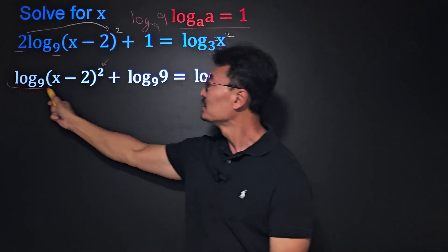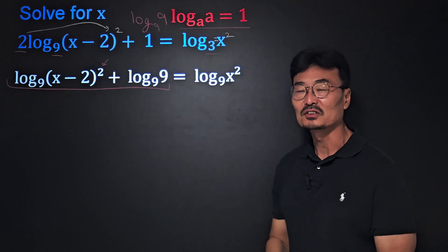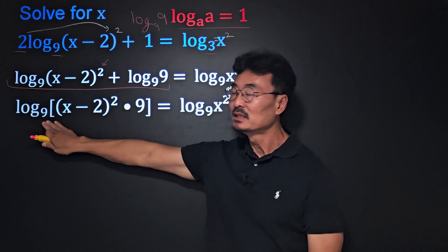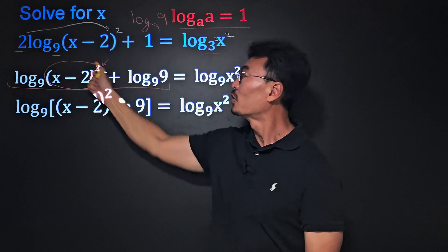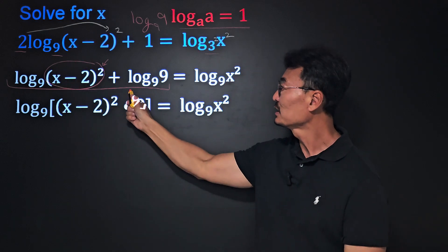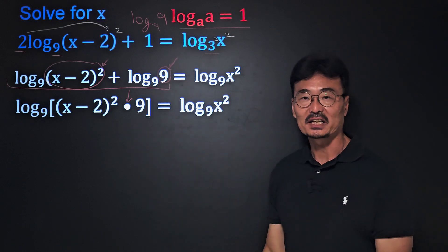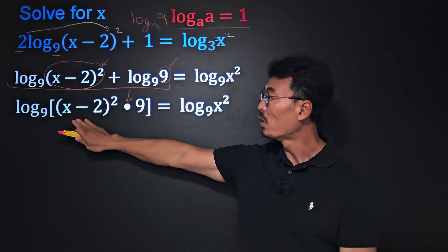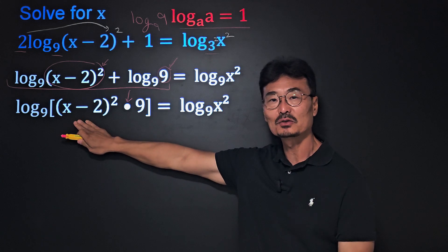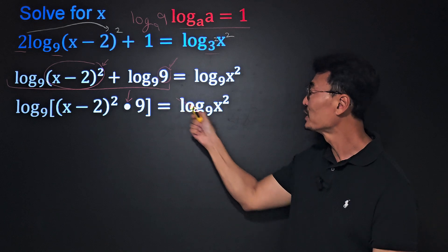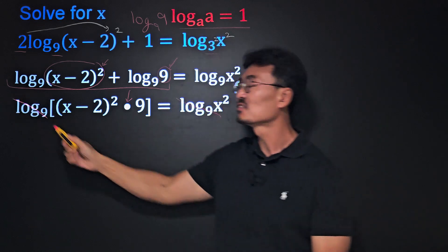In order to do that, we need to go ahead and combine these two logs. And to do that, we take log of base 9, x minus 2 square, meaning the argument from the first log, times 9, the argument from the second log. Now that we have one log expression on the left side of the equal sign and one log on the right side of the equal sign, we're able to put it, cross out the logs like this.